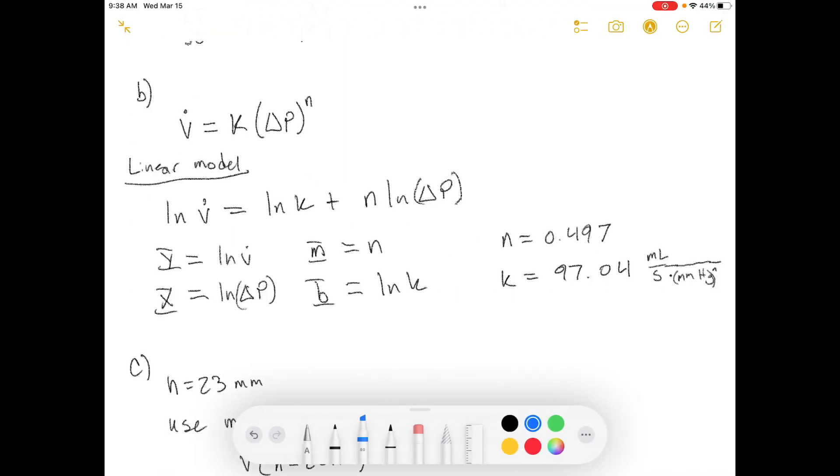All right. Let's move back over to our writing here. So we have this relationship that they gave to us and we want to turn this into a linear model. There are other ways you can solve for K and N without turning this into a linear model. Well, because this is the procedure that they've given to us in this book and it's a pretty good setup for this, we can just go ahead and use the linear model. So we'll use a linear model, which means we'll take a log of this equation, both sides, and we get that the log of the volumetric flow rate is equal to log K plus N times log delta P.